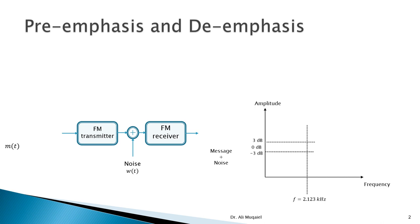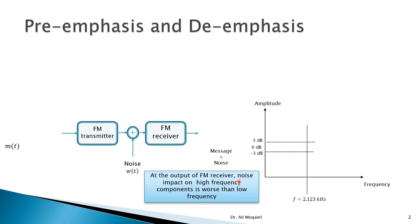Starting with pre-emphasis and de-emphasis: the message goes to the FM transmitter, through the channel where noise is added, and at the receiver side we get the message plus noise. We notice that noise impacts higher frequency components worse than lower frequency components. So the effect of noise on the high frequency side is worse than on the low frequency side. How do we solve this problem? We use the concept of pre-emphasis and de-emphasis.